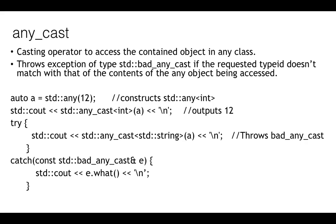Let's see another casting operator, any_cast, which is available to access the contained object in any class. This can be used to safely type cast the contained value and access it. This operator throws an exception of type bad_any_cast if the requested type ID is not matching with the content of the any object being accessed. Let's see a simple example here again.